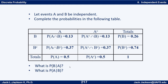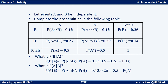From the table let's work out the probability of B given A and the probability of A given B. The probability of B given A is the probability of the intersection of A and B divided by probability of A — that's 0.13 divided by 0.5, which is 0.26. Notice that is the same as the probability of B. We know that probability of B given A equals probability of B for independent events, so we should have known the answer. Similarly, probability of A given B equals probability of A, so it should be 0.5. And indeed, 0.13 divided by 0.26 is 0.5, which is the probability of A.